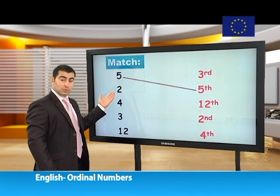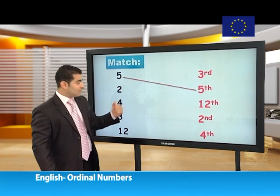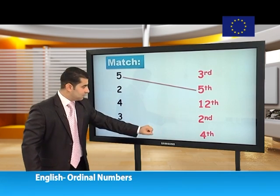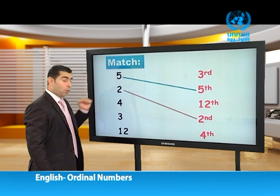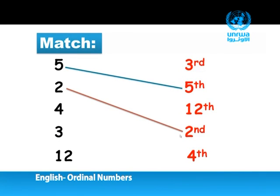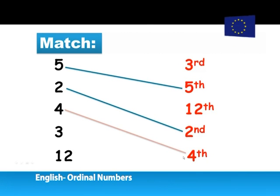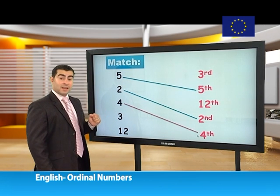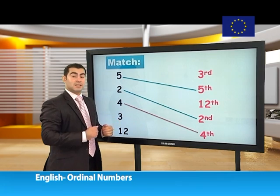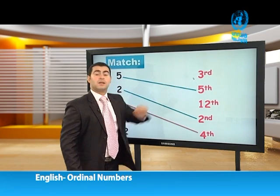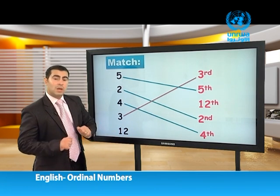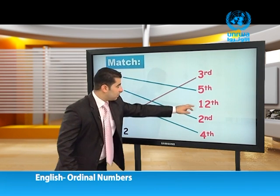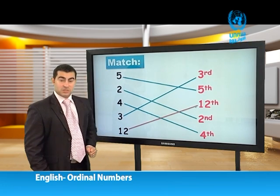Two — we will say 'second.' Where is second? Very good, this is second. Excellent. Now number four — we say 'fourth.' Where is fourth? Good, this is fourth. Three — we say 'third.' This is third. The last one — twelve — this is twelfth. Thank you very much.